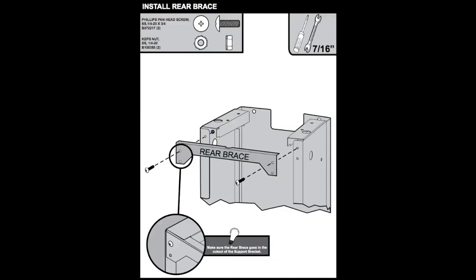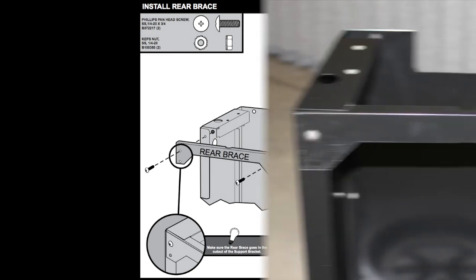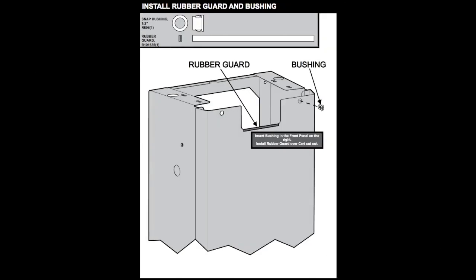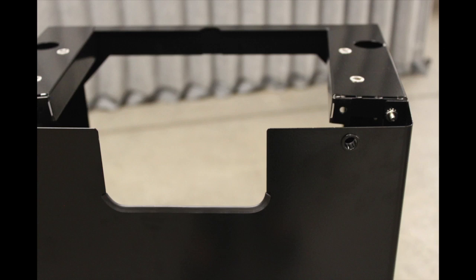Install the rear brace using only the top screws for now. You will add the other screws a bit later. Install the rubber guard and the bushing to the front of the cart. The igniter wires will pass through the bushing.